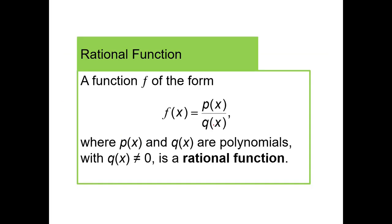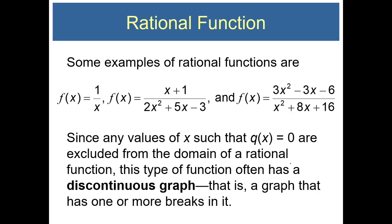A function f of the form f of x equals p of x over q of x, where p of x and q of x are polynomials with q of x being non-zero, is a rational function. Some examples of rational functions are f of x equals 1 over x, f of x equals x plus 1 divided by 2x squared plus 5x minus 3, and f of x equals 3x squared minus 3x minus 6 over x squared plus 8x plus 16. Essentially, rational functions are ratios of two polynomials.